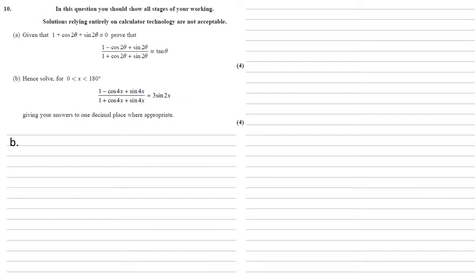Part b, hence solve for x between 0 and 180 degrees: 1 minus cos 4x plus sine 4x over 1 plus cos 4x plus sin 4x is equal to 3 sin 2x.